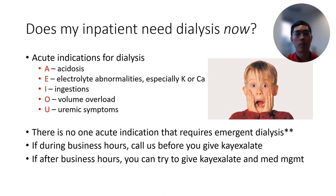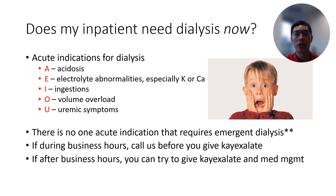We can use the mnemonic AEIOU to help us remember the acute indications for dialysis. A refers to a metabolic acidosis that is resistant to medications. E refers to electrolyte abnormalities, especially hyperkalemia or hypercalcemia. I refers to any ingestions that are dialyzable. O refers to volume overload for patients who are not responsive to diuretics. And U refers to the uremic symptoms that patients can have once they develop severe renal failure.